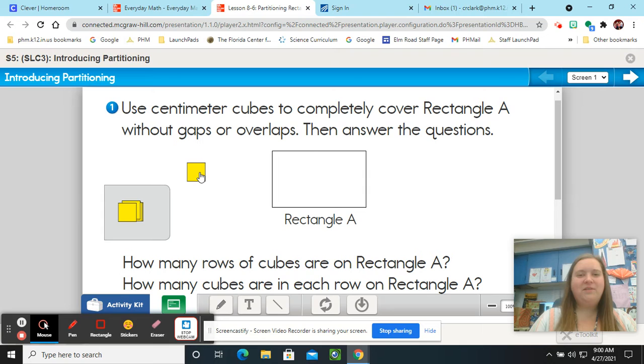So on page 202, what we want to do is we want to partition this rectangle A into smaller sections. And how we're going to do that is in your book, you are going to take those little centimeter cubes, and you are going to start filling up the rectangle, making rows and making columns.